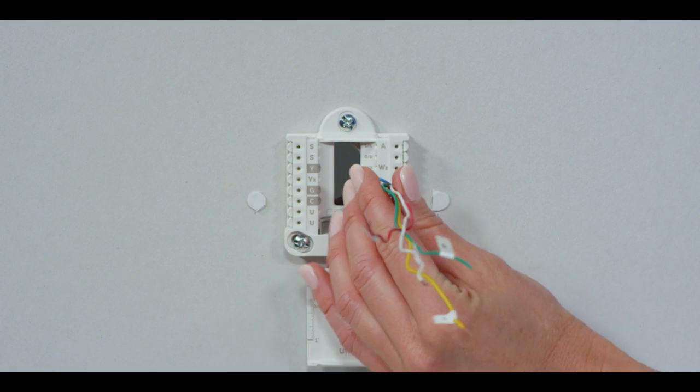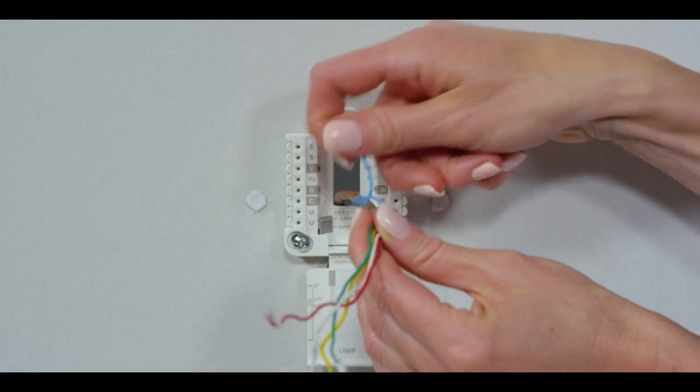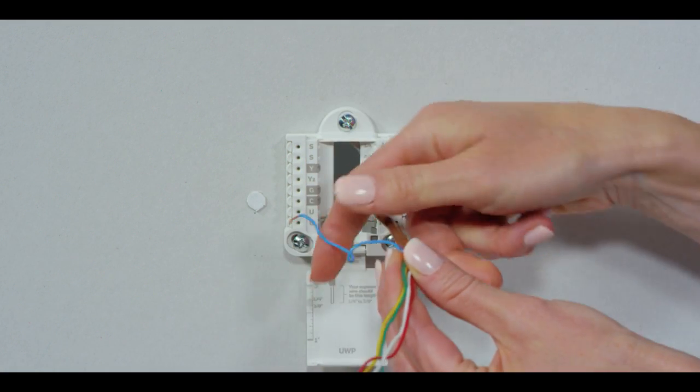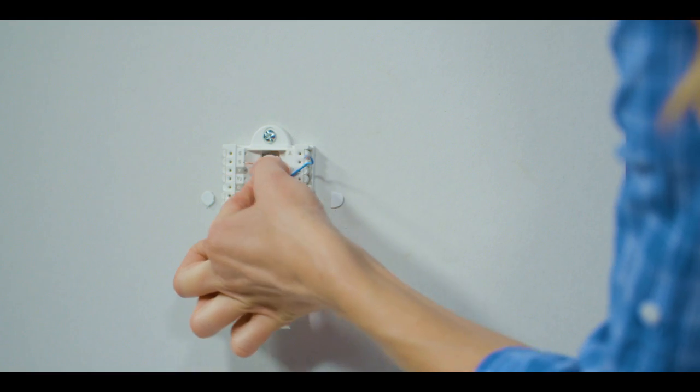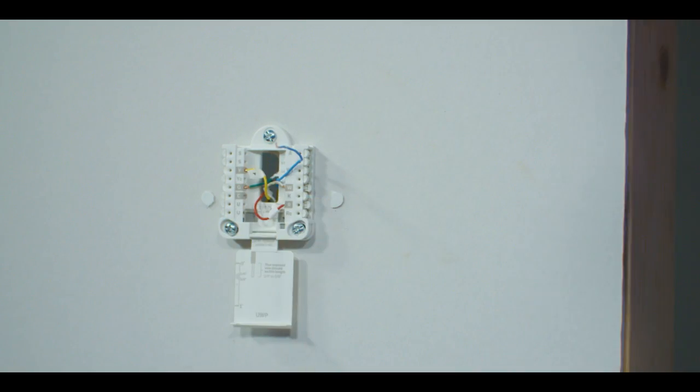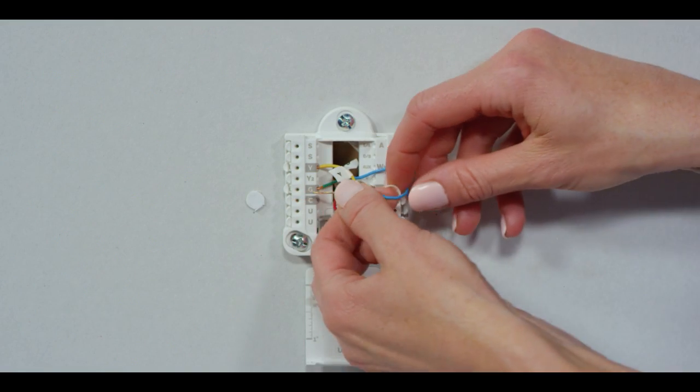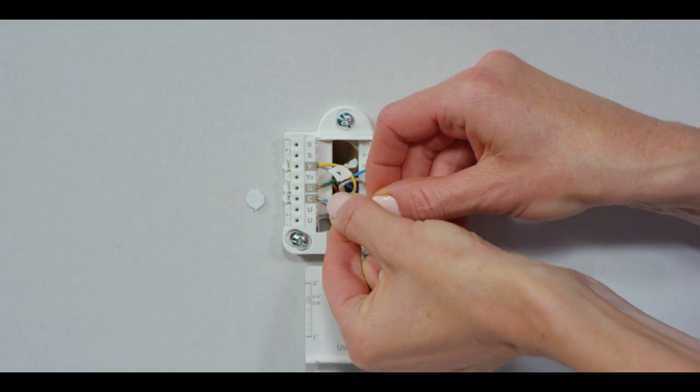Once you've installed the backplate of your new thermostat onto the wall, unwrap the wire if it's wrapped around your wire bundle. Connect your labeled wires to the proper terminals. Connect the extra wire to the C terminal of your new thermostat.